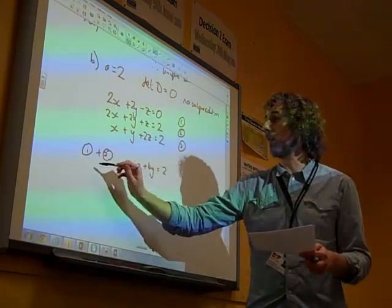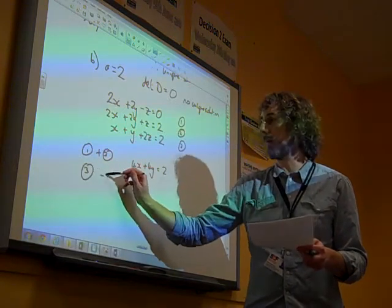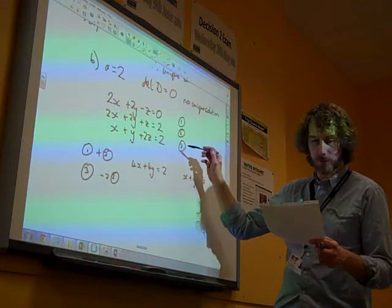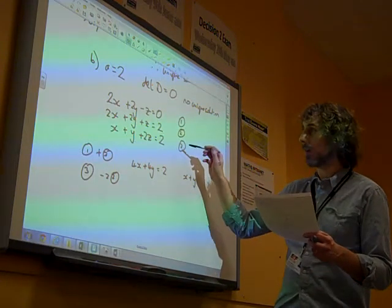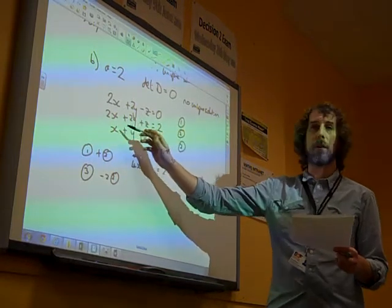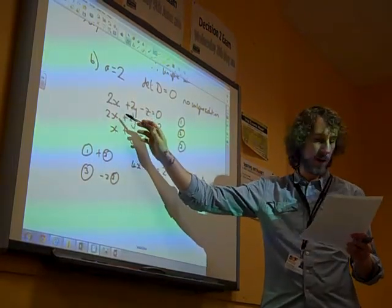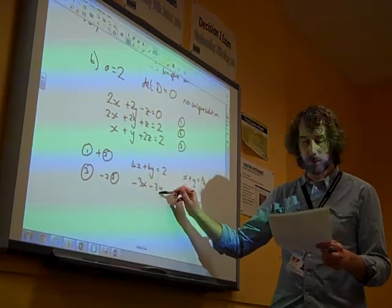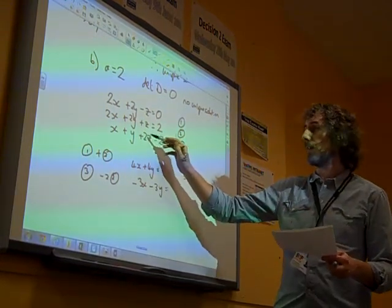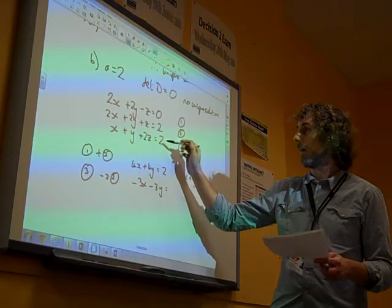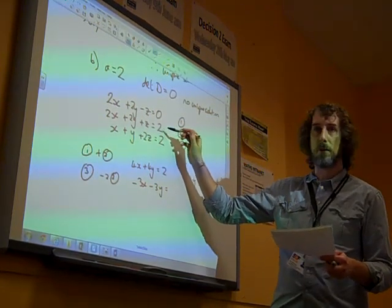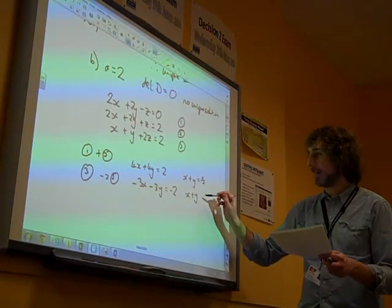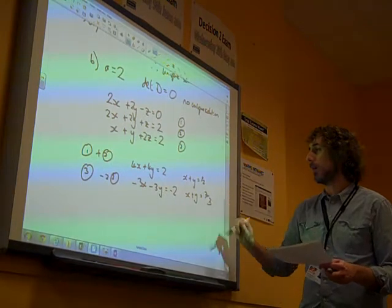And if you do equation 3 take away 2 times equation 2, is that the right way around? Yes, that would work, wouldn't it? So that one take away twice that one gives us minus 3x minus 3y, 2z take away 2z is 0, 2 minus 2 times 2 is minus 2, which tells us that x plus y is 2 thirds.